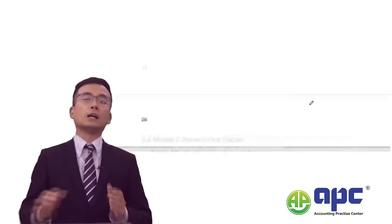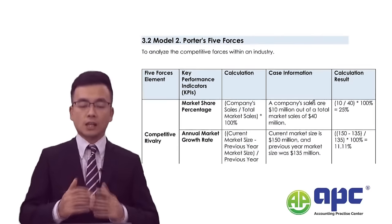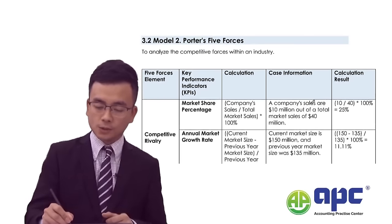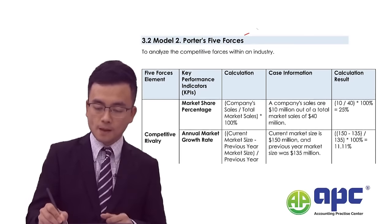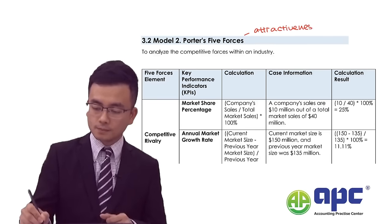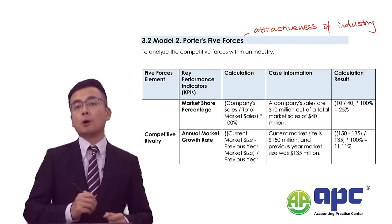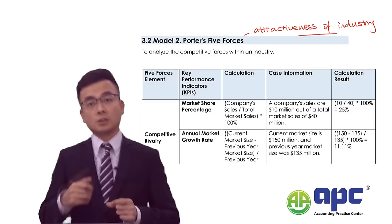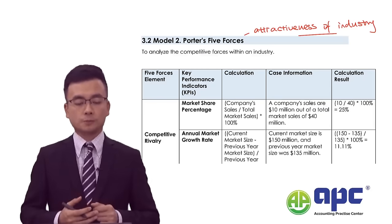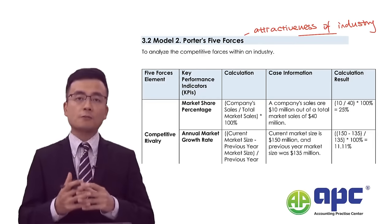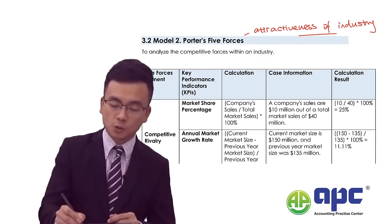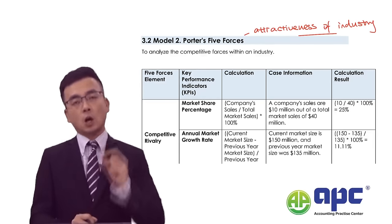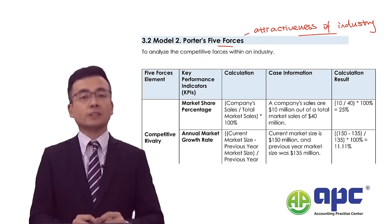To analyse whether the industry is attractive — the attractiveness of the industry — meaning whether, if I were to operate in this industry, I can make money from it — we can use Porter's Five Forces model. Porter's Five Forces details five forces affecting the overall profitability in the industry.